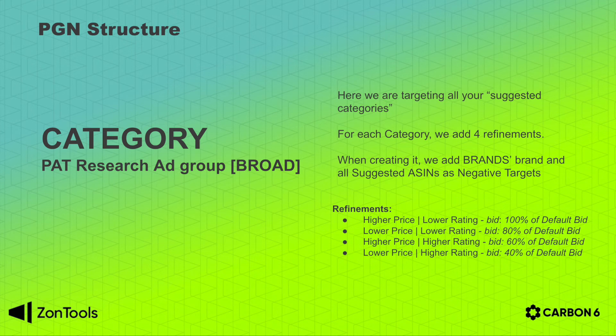The next segment is by higher price and higher rating — more expensive products with higher ratings are perceived as higher value products within the category, so you are most likely to convert less, and we will bid only 60% of your default bid. The last segment is lower price and higher rating — with this segment you'll have the smallest chance of conversion because you are selling something more expensive with a lower star rating. Because of this, we will only use 40% of your default bid.